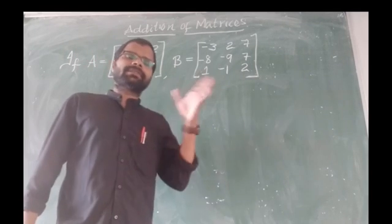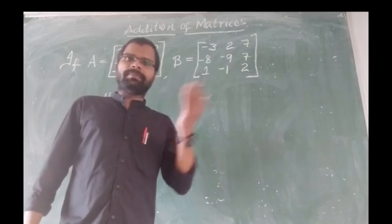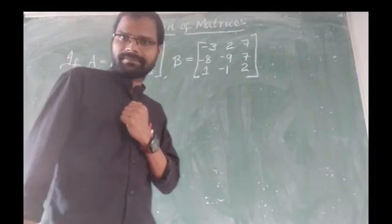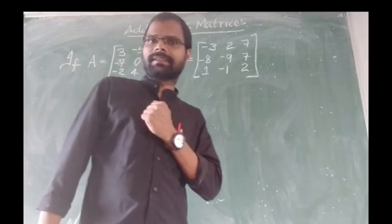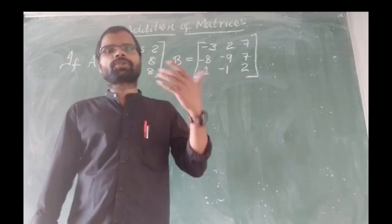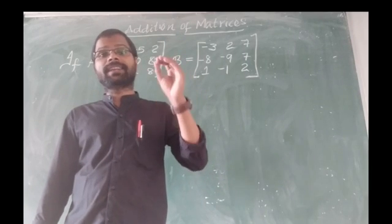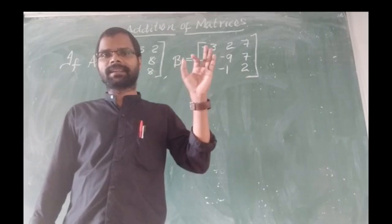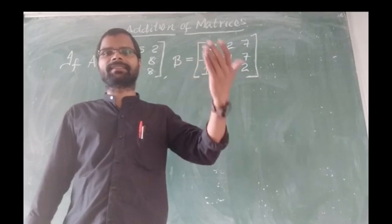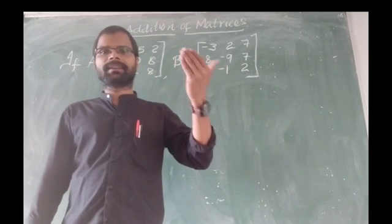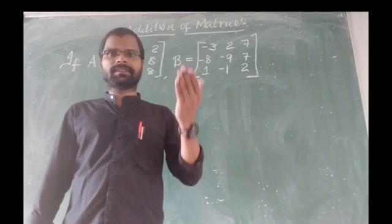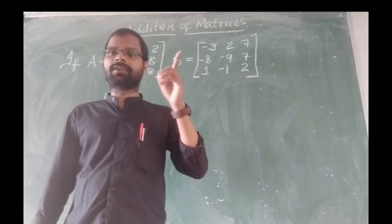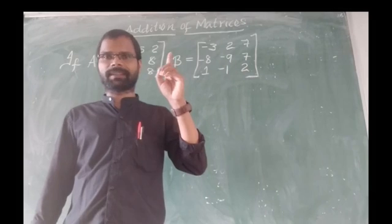Suppose A and B are two matrices of the same order. Then, how to add those two matrices? Matrix A is added with matrix B. Remember one thing: the matrices should be of the same order.